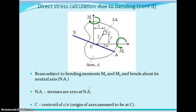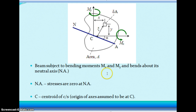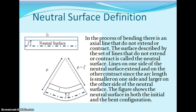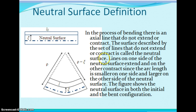Above the neutral axis the stresses are zero. The neutral surface is defined as follows: if the beam is bending — either upward or downward — the topmost fibers experience tension and the bottommost fibers experience compression. Some layer will not experience tension or compression; that layer is the neutral surface. If you draw a line through it, that is the neutral axis. Above the neutral axis there are no tensile or compressive stresses.